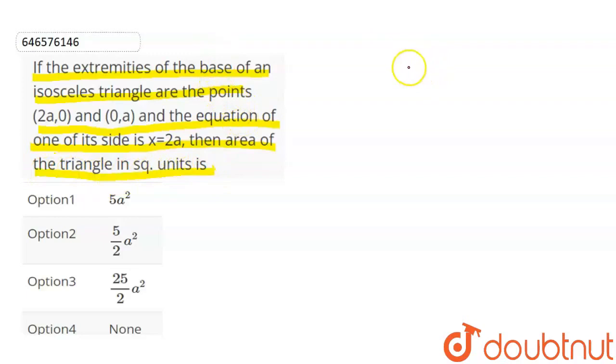First of all, when x equal to 2a, the coordinate is (2a, 0). And the y-axis coordinate is (0, a). Now he said that AC is the base of the triangle. AC, what is it? Base.